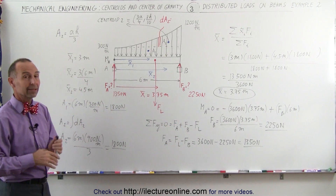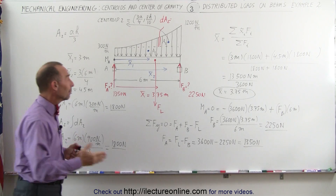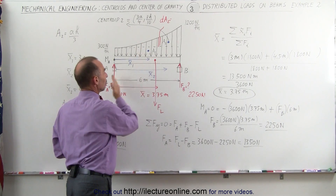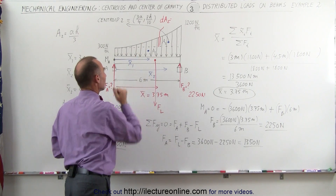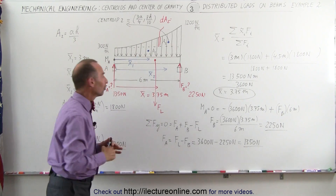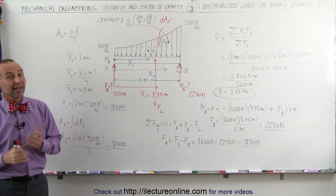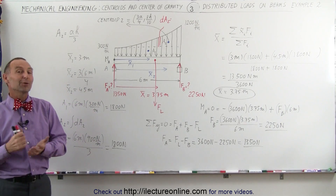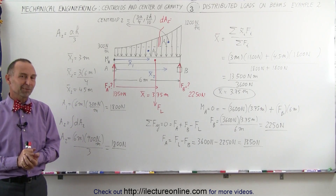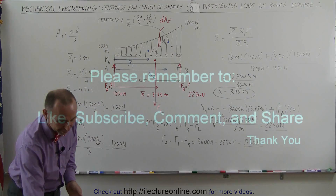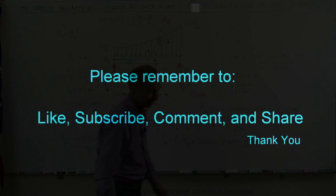So at A we have 1350 newtons, at B we have 2250 newtons. Together they add up to 3600 newtons, which is the entire distributed load on the beam, acting at the centroid 3.75 meters from point A. And that's how we do these types of problems.